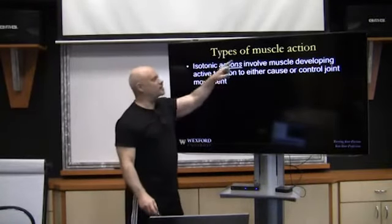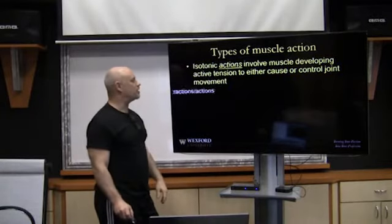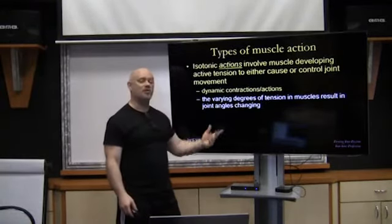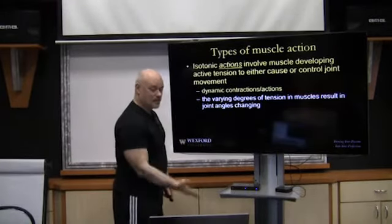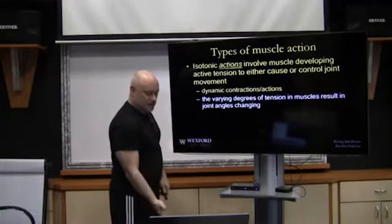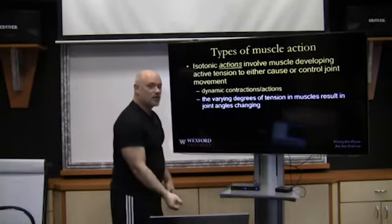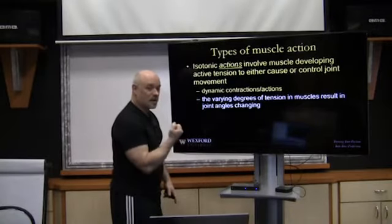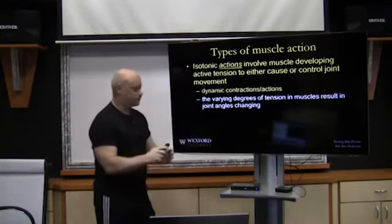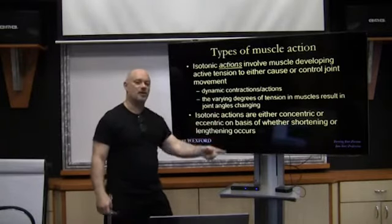Now isotonic actions involve muscles developing active tension to either cause or control joint movement. We have dynamic contractions or dynamic actions, and there are varying degrees of tension in the muscle resulting in joint angle changes. As the weight moves away from the joint during elbow flexion, it increases the moment arm, so the muscle has to develop more tension. Once it gets past 90 degrees it moves toward the joint again, so tension is not as great. Isotonic actions are either concentric or eccentric based on whether the muscle is shortening or lengthening.